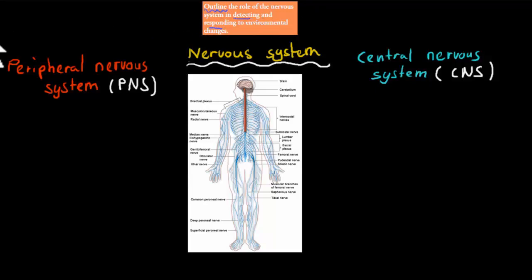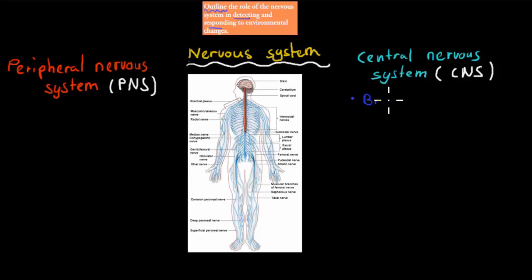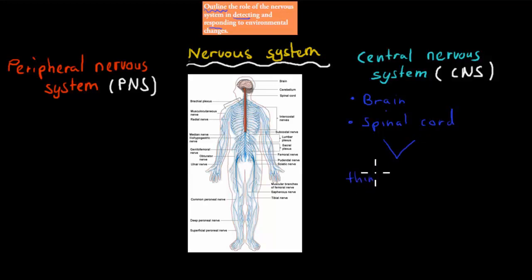Before I start I want to go over what the nervous system is and what makes it up. Here we have a picture of the nervous system with two different colors: a blue color and a reddish color, and obviously we have the brain as well. The brain and the spinal cord — that red part — are part of the central nervous system. These are the parts which do most of our decision making; they are our thinking and reacting center.